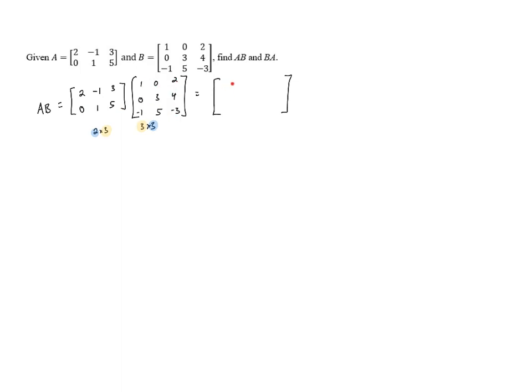So let's start with this first entry in the upper left-hand corner. This is going to be the inner product of the first row and the first column. So we've got 2 times 1 plus negative 1 times 0 plus 3 times negative 1. So it's going to be 2 plus 0 plus negative 3, and 2 minus 3 is negative 1.